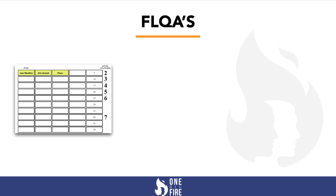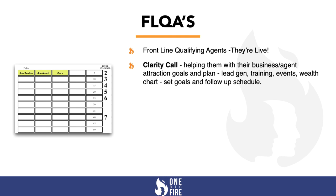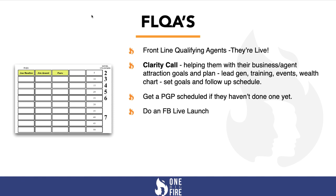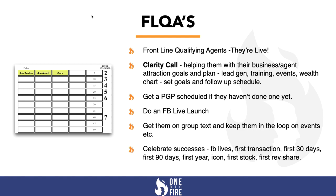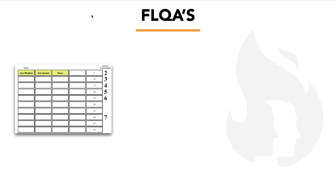In this section you track your FLQAs — frontline qualifying agents who are live with eXp. Set them up on a clarity call, help with their business and agent attraction goals, and create a plan. Support them with lead generation, training, and events, and help them with their wealth chart. Get a PGP scheduled, launch them with a Facebook live, get them on the group text, and celebrate their successes — first transaction, first 30 or 90 days, first year, icon status, first stock, or first revenue share check.